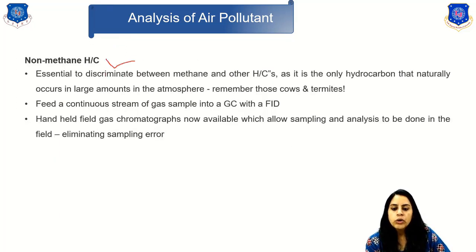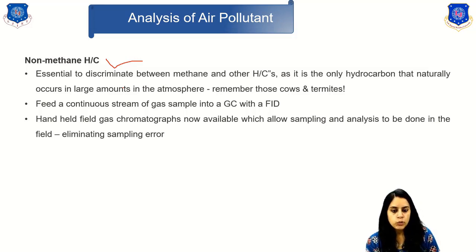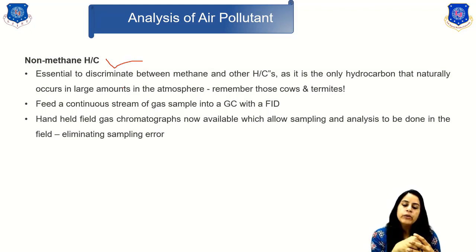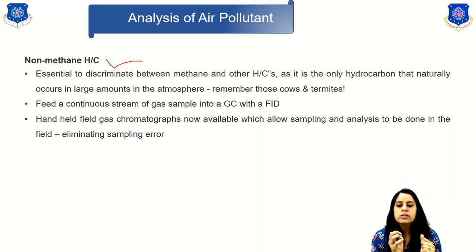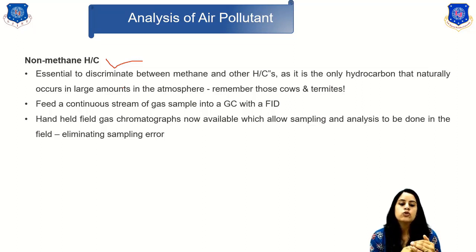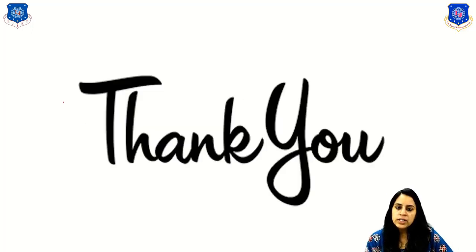For non-methane hydrocarbons, it is essential to discriminate between methane and other hydrocarbons, as methane is the only hydrocarbon that naturally occurs in large amounts in the atmosphere. A continuous stream of gas sample is fed into a gas chromatograph with a flame ionization detector (GC-FID). Handheld field gas chromatographs are now available, allowing sampling and analysis to be done in the field, eliminating sampling errors. This concludes today's lecture.